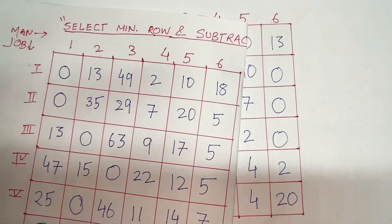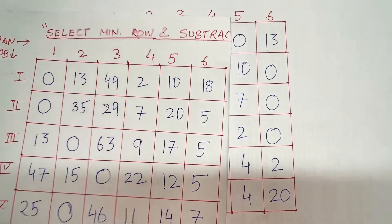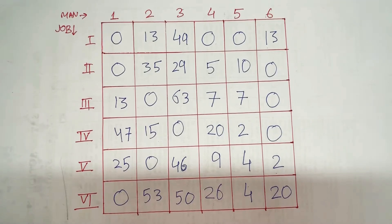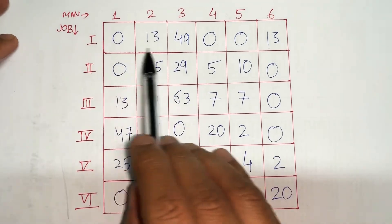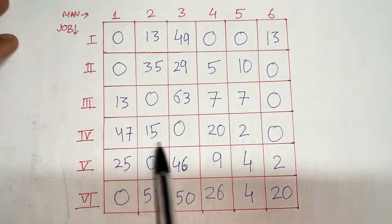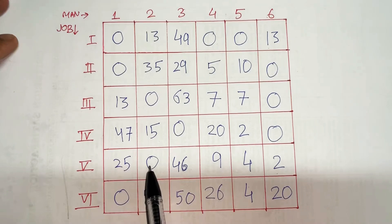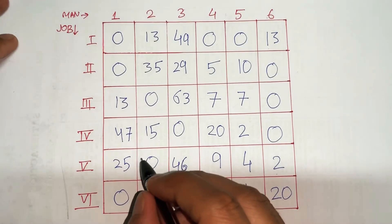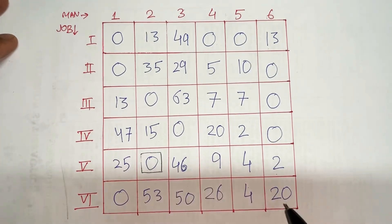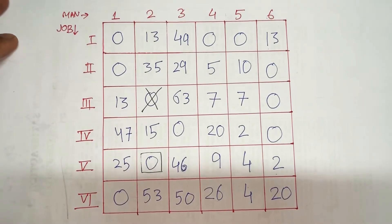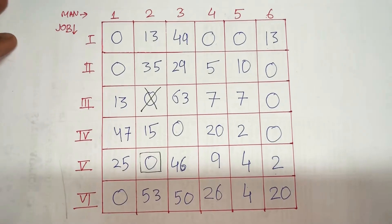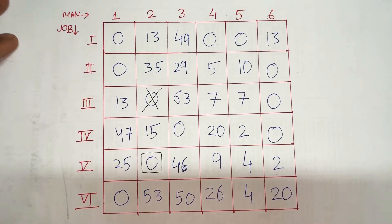I have taken the minimum of each column and subtracted it throughout, and this is going to be my solution table — I am going to make assignments in this table. Now let's start making assignments. The first thing is to search for a row having exactly one zero. I find one such row, so I assign that zero and cross all corresponding zeros in that column. Then I get back and search again for a row with exactly one zero.